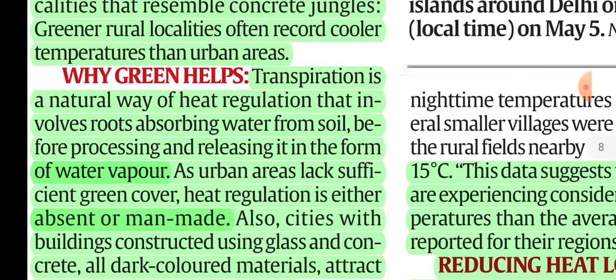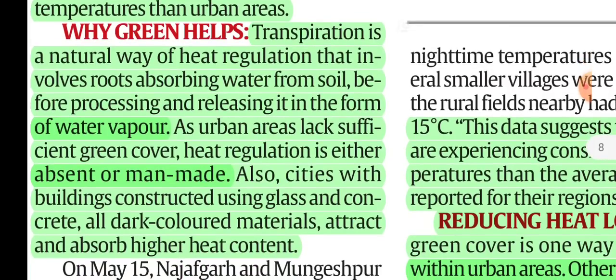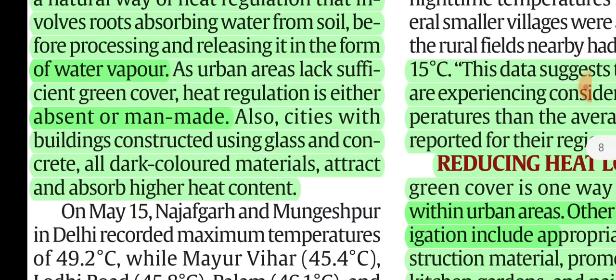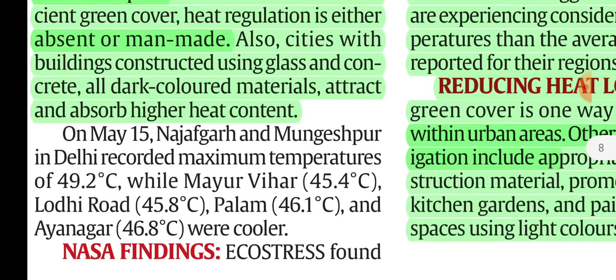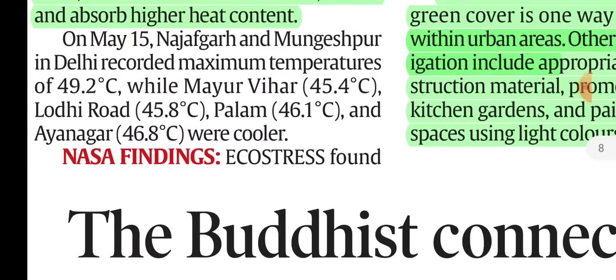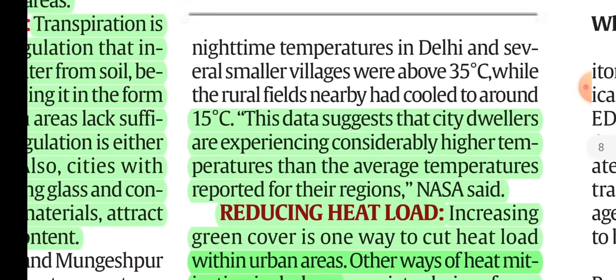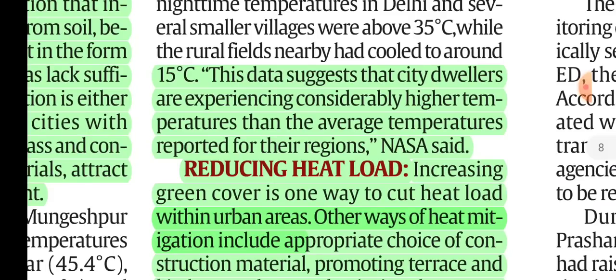Transpiration is a natural way of heat regulation that involves roots absorbing water from soil and releasing it in the form of water vapor. But transpiration does not occur in urban areas because green cover is very low. As urban areas lack sufficient green cover, heat regulation is either absent or man-made, which means urban heat islands form and temperatures are very high compared to rural areas.